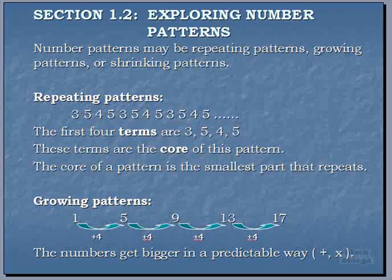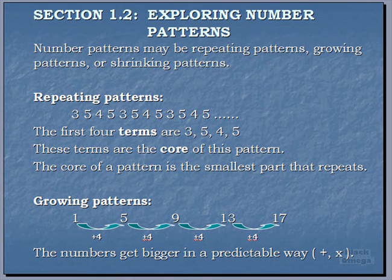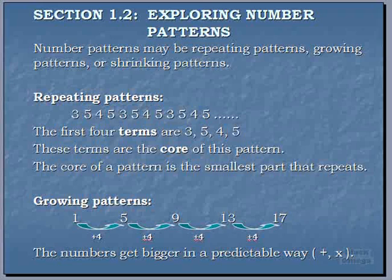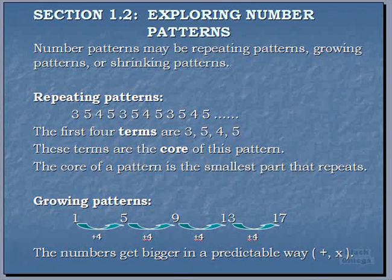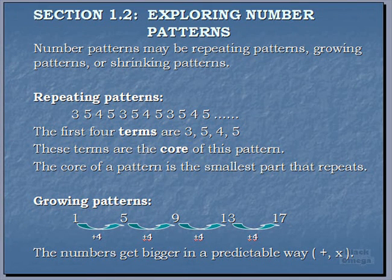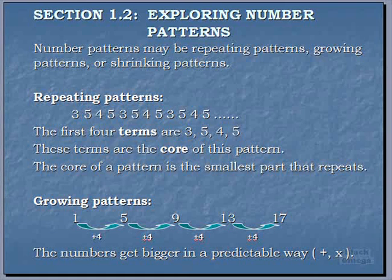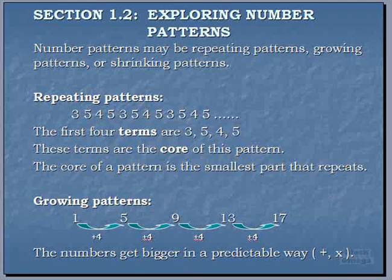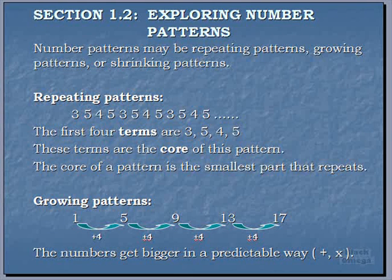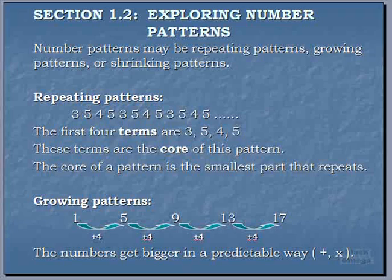Now the first one we're going to look at is a repeating pattern. So that we have 3, 5, 4, 5, 3, 5, 4, 5, and finally 3, 5, 4, 5. So the first four terms were 3, 5, 4, 5.